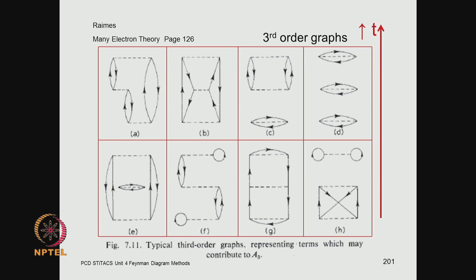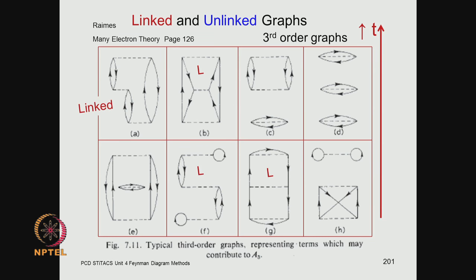Third-order graphs are built following exactly the same techniques as the earlier cases, giving a variety of third-order graphs. One thing to notice is that some of these diagrams are linked and some are unlinked. The linked and unlinked terms are self-explanatory by looking at the pictures — you can recognize which are linked and which are unlinked simply from the topology of the diagram, without needing extensive definitions.